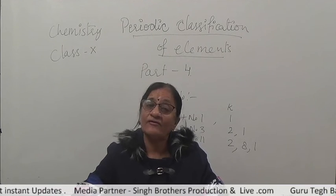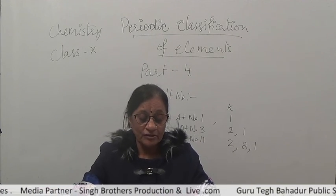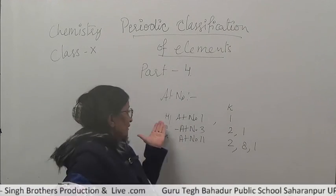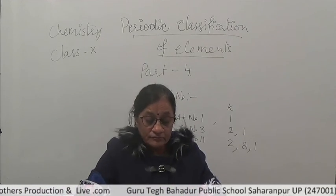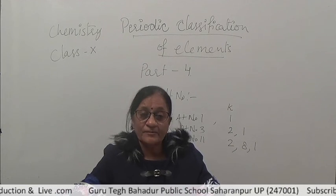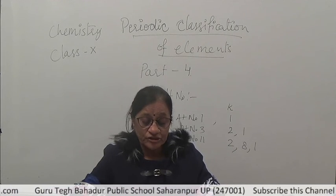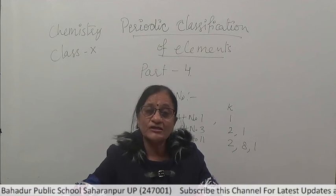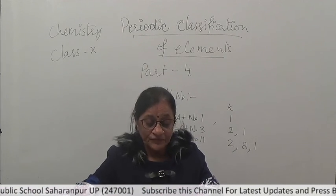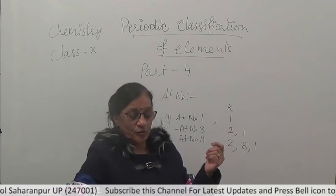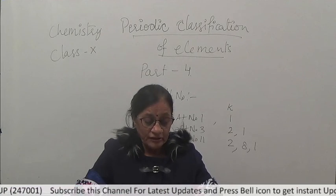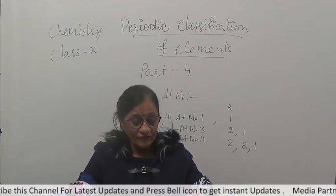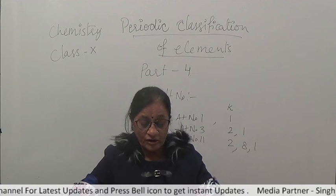There are 7 elements in group 1 of the periodic table. Except hydrogen, all other elements of this group are metals: lithium, sodium, potassium, rubidium, cesium, and francium. Each element of group 1 has 1 electron in its outermost shell — that is, all have 1 electron in the outermost or valence shell.